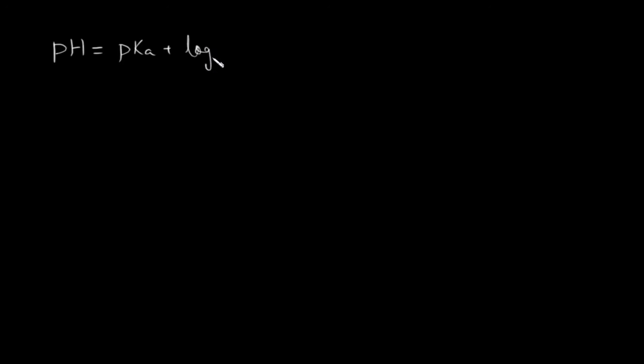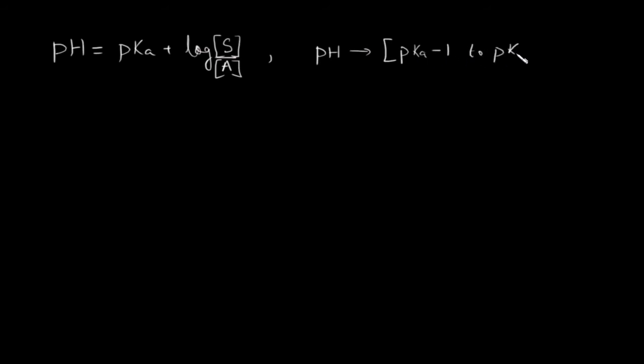Hello everyone. In this lecture we will see the types of questions that we ask about the buffer solution. Before we look at the questions, we will quickly revise the formula. The formula for the buffer solution is the pH formula: pKa plus log of concentration of salt by concentration of acid. The pH range of buffer is from pKa minus 1 to pKa plus 1. This is the minimum and maximum pH for an acidic buffer, and the best case scenario is pKa, where buffer capacity is maximum.